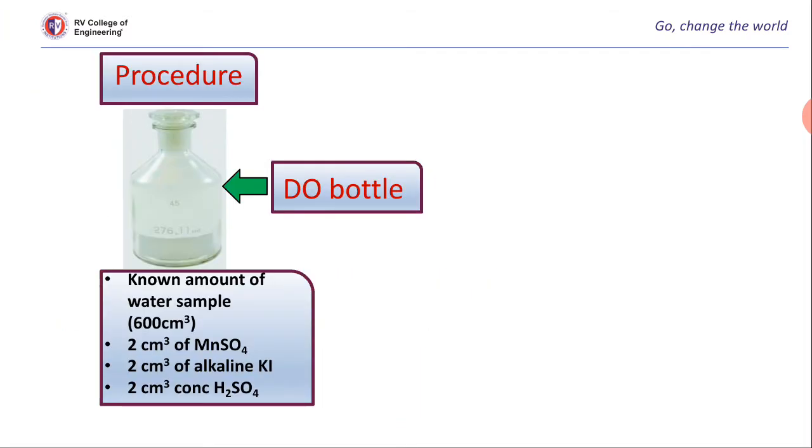Now we will understand the procedure behind this experiment. To a known quantity of water sample, let us say 600 cm³ of water sample is taken in DO bottle. To this we have to add 2 cm³ of alkaline KI solution followed by 2 cm³ of manganese sulfate solution. The bottle is stoppered and the solution is mixed carefully by inverting it for few times. The precipitate is allowed to settle.